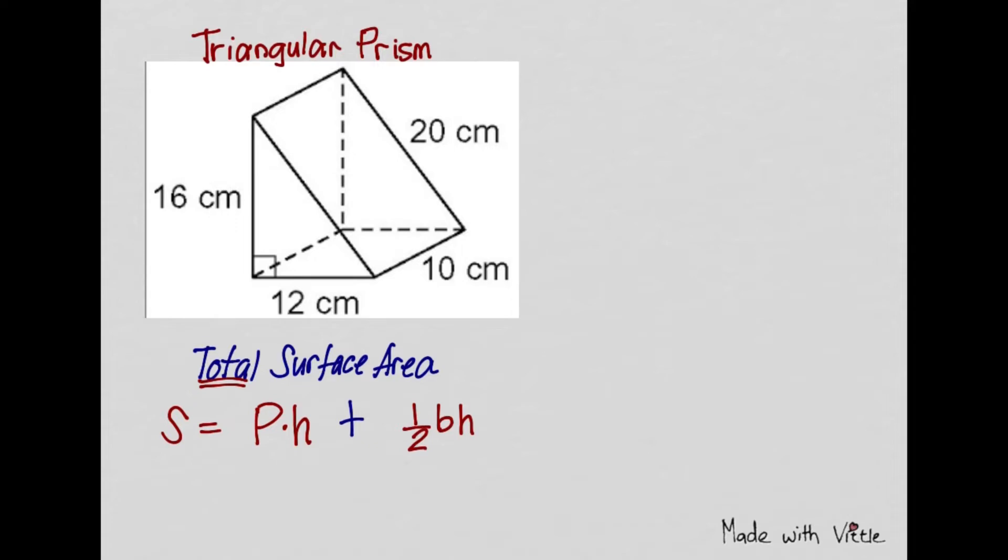The area of one triangle is one half times base times height. And there are two of them, this side here and the other side here is a triangle. Therefore, we're going to have to multiply it by two. So this is the whole formula of your total surface area for a triangular prism.